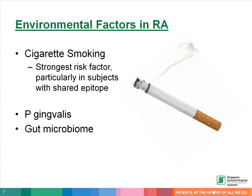Cigarette smoking is a strong risk factor for the development of rheumatoid arthritis, especially in individuals with a shared epitope. In addition to increasing disease susceptibility, smoking is also associated with greater disease severity. Periodontal disease is associated with rheumatoid arthritis. The bacteria associated with periodontitis, P. gingivalis, contains the enzyme peptidyl-arginine deiminase, which allows the bacteria to generate citrullinated peptides in vivo. More recently, studies have shown that gut microbiome is also associated with the development of rheumatoid arthritis.